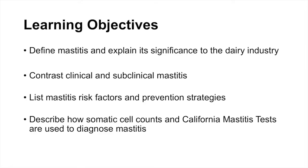At the end of this laboratory station, there are a few things that you should know. You should be able to define mastitis and explain why it's such a significant disease to the U.S. dairy industry. You should be able to compare and contrast the different types of mastitis, such as clinical and subclinical. We're going to cover some of the risk factors that make an animal more likely to come down with mastitis, and ways that we can prevent mastitis from occurring. We'll then describe how somatic cell counts and the CMT test can be used to diagnose cows that we suspect have mastitis.